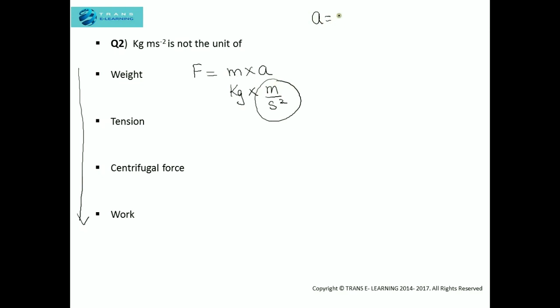If you're wondering how I got this unit, I'll explain quickly. Acceleration equals change in velocity over time, and velocity is displacement over time. So this will be displacement over time squared. The fundamental unit of displacement is meter, and the fundamental unit of time is second.